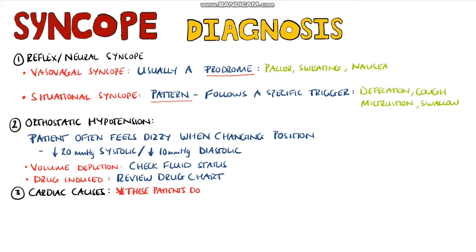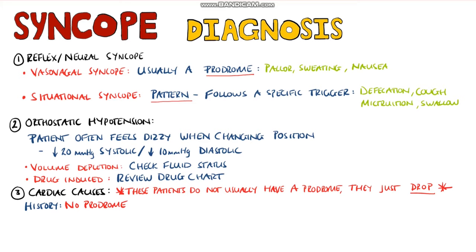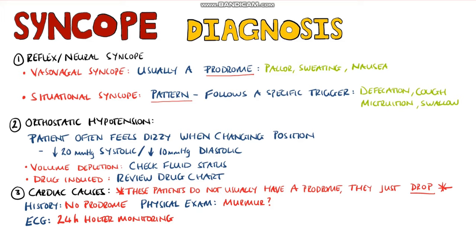When the cause of syncope is cardiac in nature, the history won't usually have any prodrome — the patient will just drop and hit the floor, very different to vasovagal syncope. You might hear a murmur on physical exam, but an ECG is one of the first things you'll do. The problem is that you won't always see arrhythmias on a single ECG, so you might end up doing 24-hour ECG monitoring, known as Holter monitoring, to increase the chances of capturing the arrhythmia. Echocardiography is also performed to identify any structural defects causing the syncope.